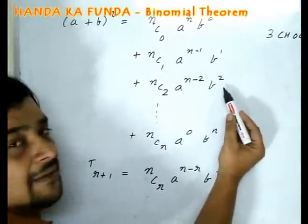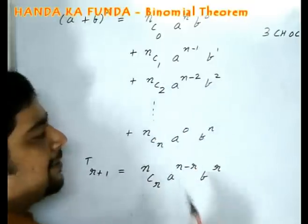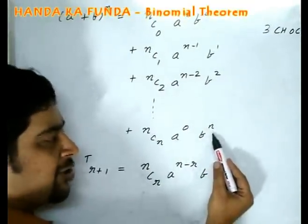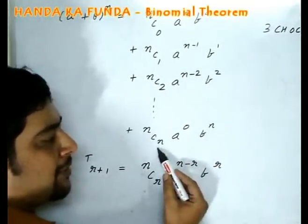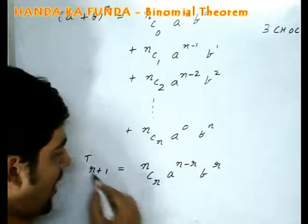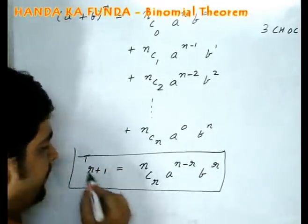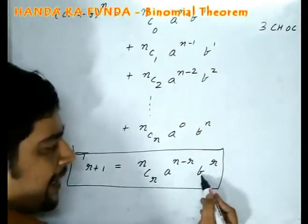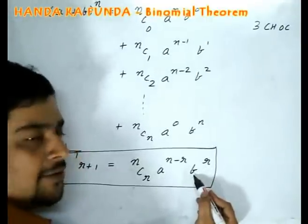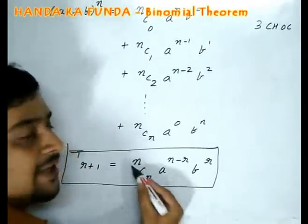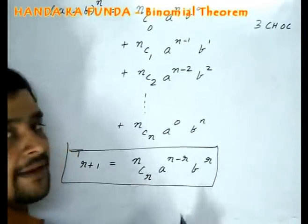I am deciding 2 chocolates to give to b. Which 2? I am deciding that in nC2 ways. I am deciding all n chocolates to be given to b that will be decided in nCn ways. A random term which was the r plus 1-th term: I am deciding to give r chocolates to b that means which r that is decided by nCr.